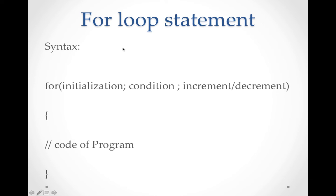Next is the for loop. The syntax uses the keyword 'for'. Inside the round brackets, we have three parts. The first part is initialization — this is fixed. The second part is the condition — this is also fixed. And the third part is increment or decrement.